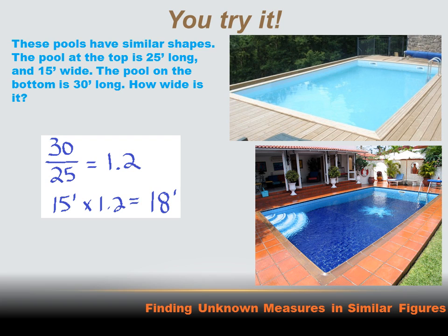In this problem, we've got a couple of swimming pools. The pool at the top is 25 feet long and 15 feet wide. The pool at the bottom is 30 feet long. How wide is it? Well, they're similar figures, so their sides are going to grow at a constant rate. We just need to figure out that constant rate and apply it to the other side. The pool at the top was 25 feet long and the pool at the bottom is 30 feet long, so 30 divided by 25 gives us the rate of growth: 1.2 times 25 feet equals 30 feet. If the length grew by 1.2, the width grows by the same amount. The width of the top pool is 15 feet, so 15 times 1.2 equals 18 feet.